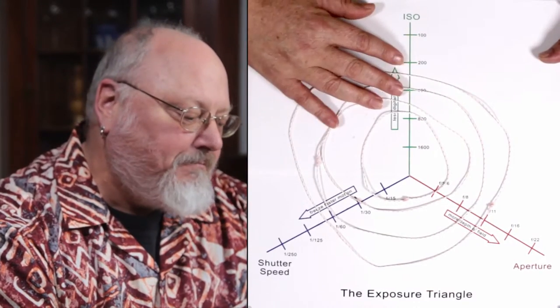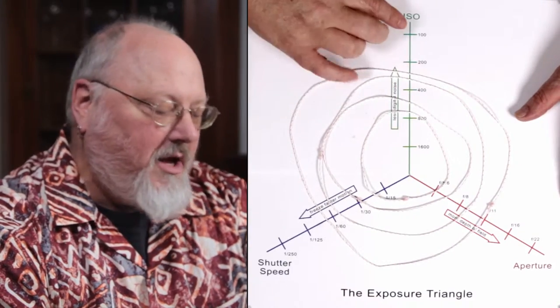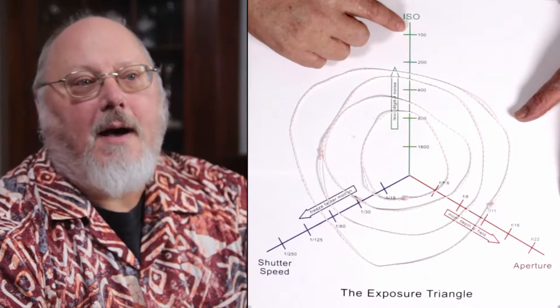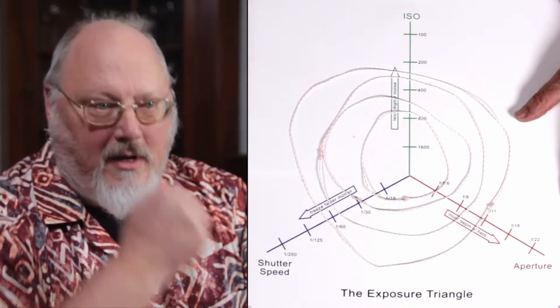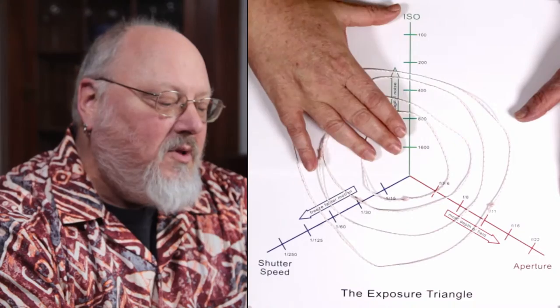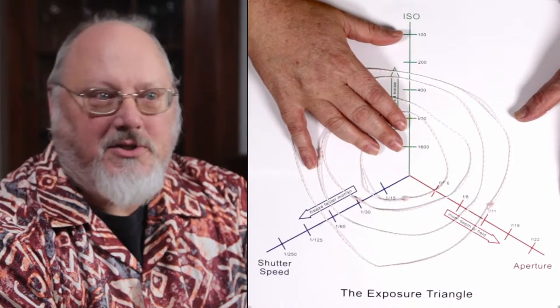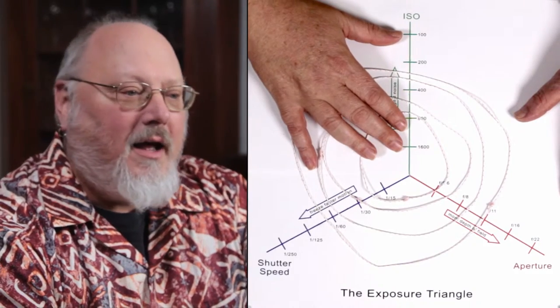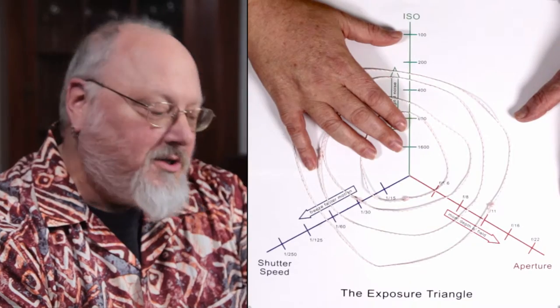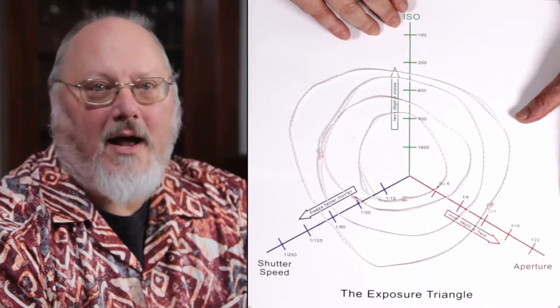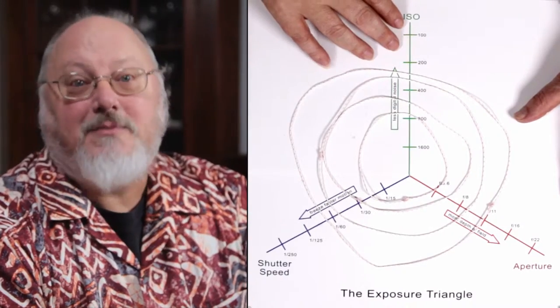So the ISO is how sensitive the sensor is to light. The lower the ISO number, the less sensitive it is, which means the more light is required to make a good exposure. And as you increase the ISO, you also increase digital noise, which is like static or film grain, and it is usually not a desirable attribute. So you want to keep the ISO as low as you can pretty much all the time, except that sometimes you can't.